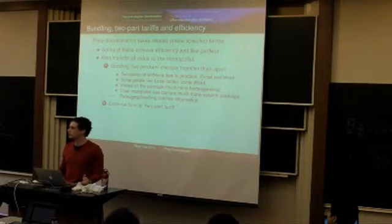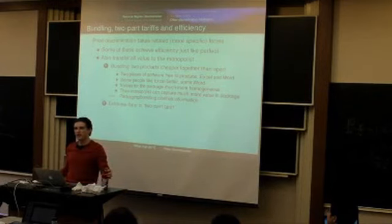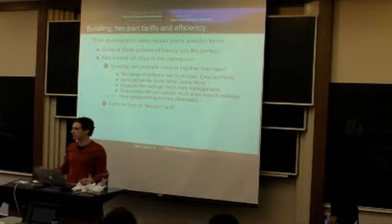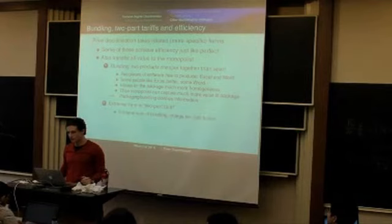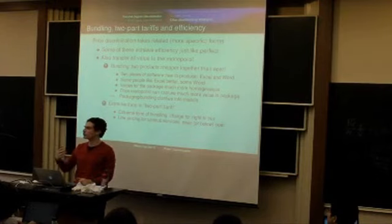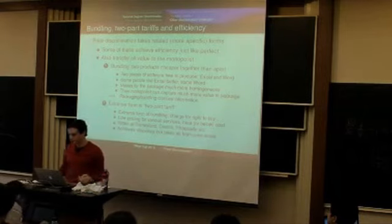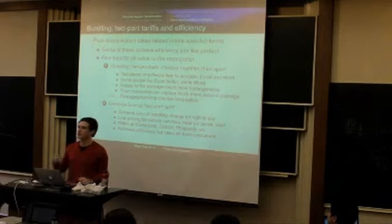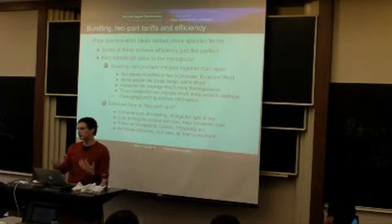Another extreme form of bundling is a two-part tariff. Think about Club Med: you pay a fixed price to get access to all their services. This means you're never discouraged from using services because of per-unit prices, so there's no distortion in how much you consume once you're there — only how many people come. Rhapsody works similarly, charging a monthly fee to access a large music library so you get maximum value from your musical experience rather than paying per song.